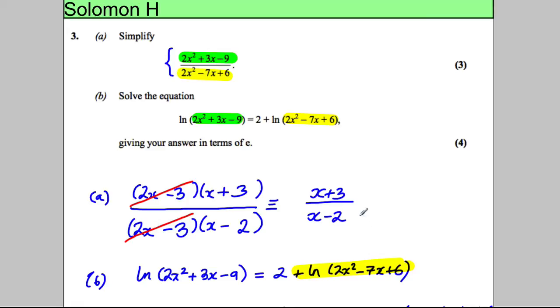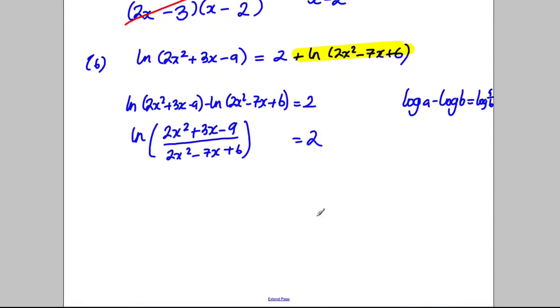Now from Part A, you've seen a more simplified version of that. This is just this expression: (x + 3) over (x - 2). So I can replace this with ln((x + 3)/(x - 2)) equals 2.